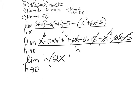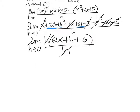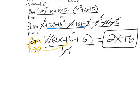The x squareds cancel, the 6x terms cancel, and the 5s cancel. Factor an h out from everybody — the 2x plus h has an h, h squared has an h, and 6h has an h — all over h. Then reduce. Take the limit as h goes to 0, plug in 0 for h, and you get 2x plus 6. That gives you a formula to find the slope at any point.